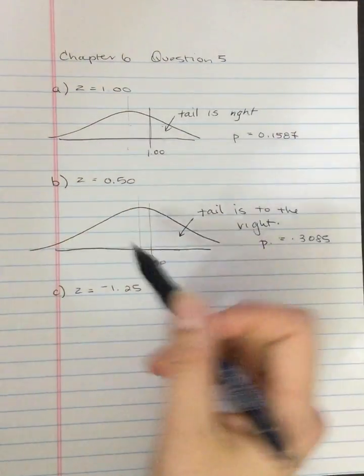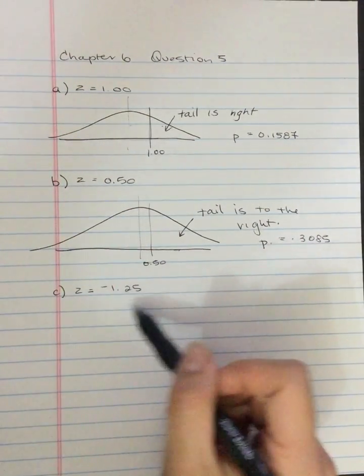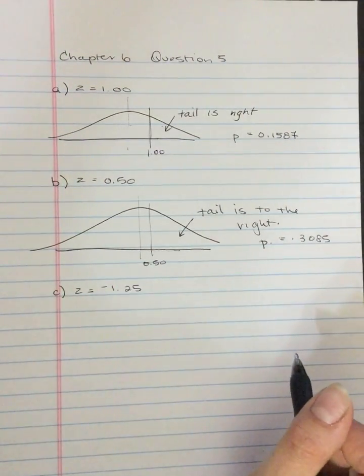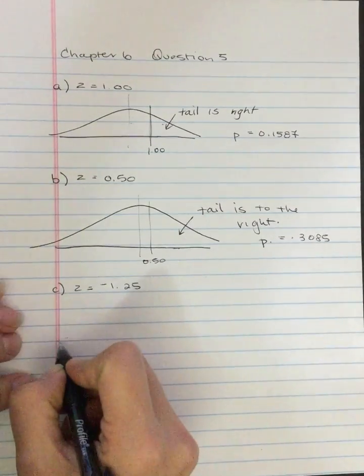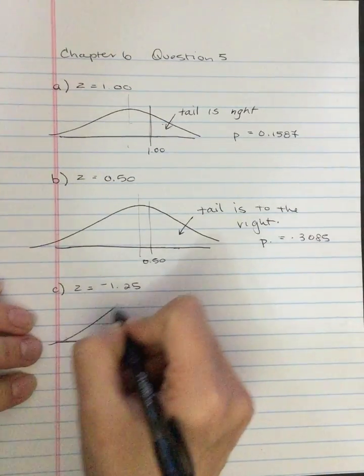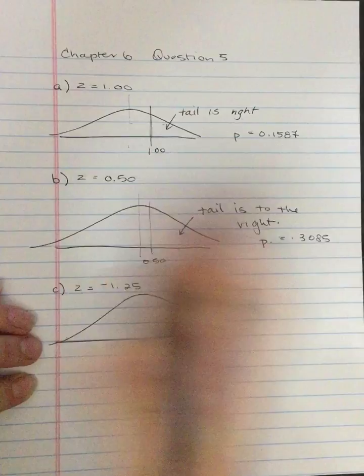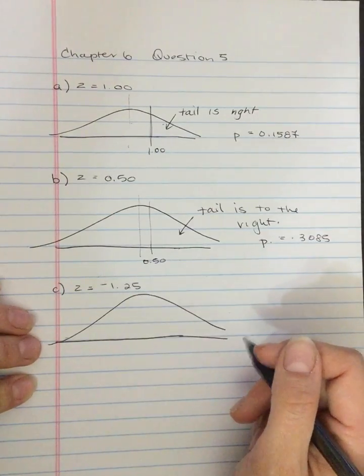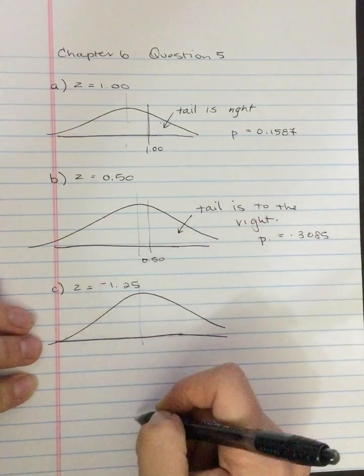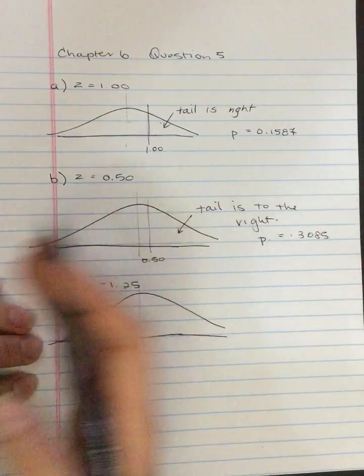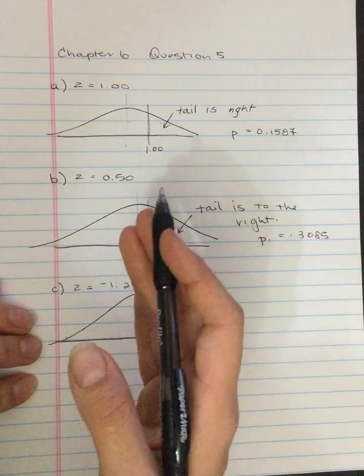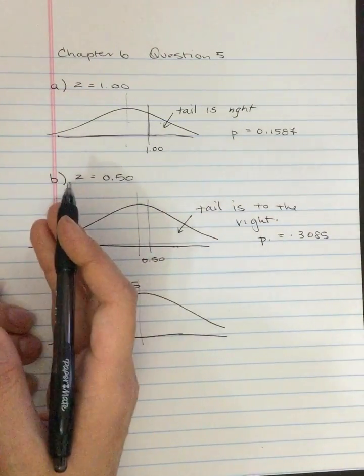Chapter 6 question 5c: the z-score here is negative 1.25. So if I draw that normal curve as I'm directed to, the mean is again here, but it's a negative z-score which means that the z-score is to the left of that mean.